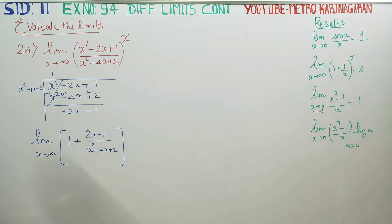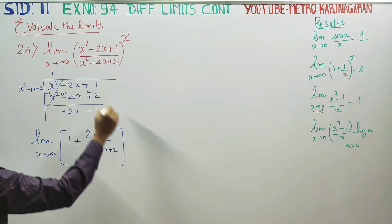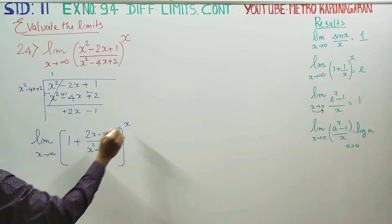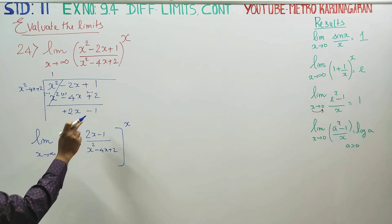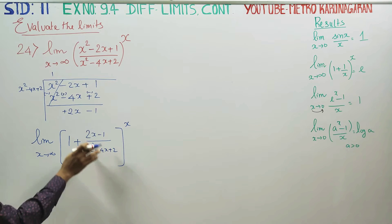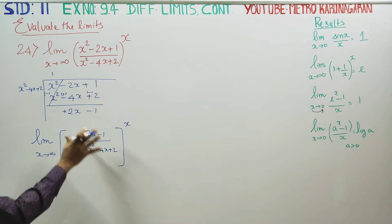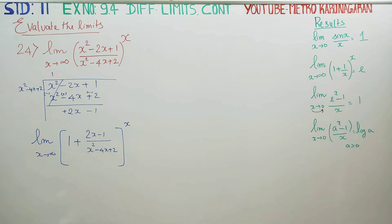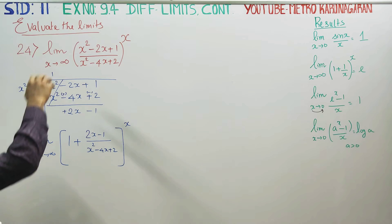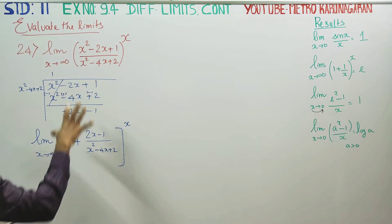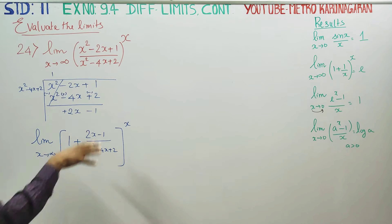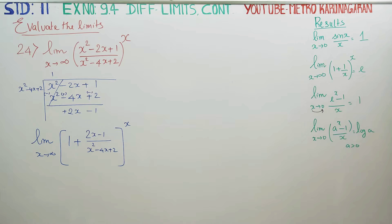When we do the division, mixed fraction form is obtained. Since it is the same degree, we cannot get a mixed fraction directly. That means divide it and express it as a mixed fraction form — similar to 1 and 2/3 in mixed fraction form.